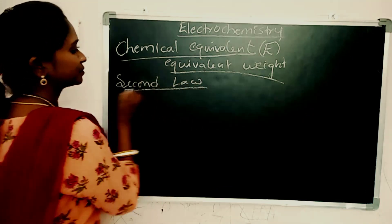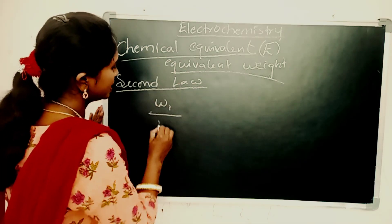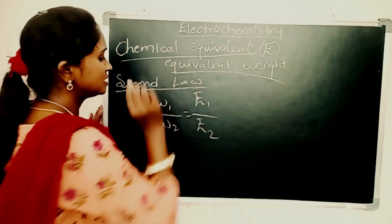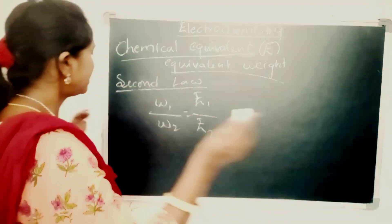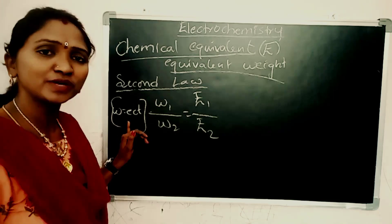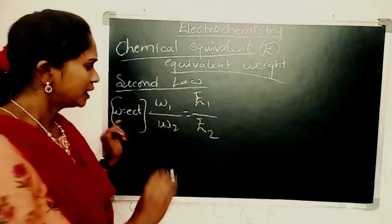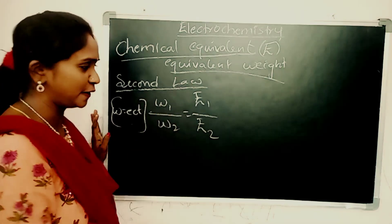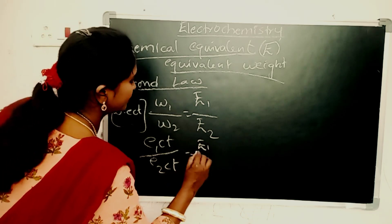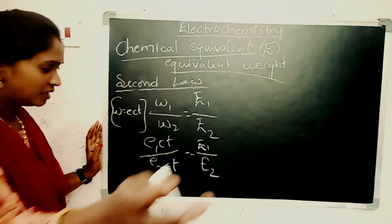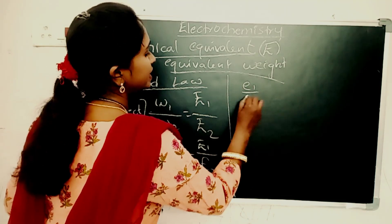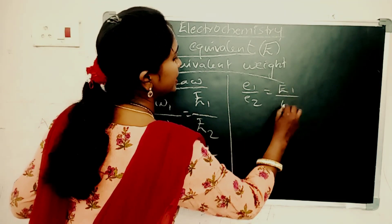According to Faraday's second law, W1 divided by W2 equals capital E1 divided by capital E2. Already we know from the first law that W equals eCt. We can replace W with eCt in the second law: e1·Ct divided by e2·Ct equals capital E1 divided by capital E2. The Ct terms cancel, giving small e1 divided by e2 equals capital E1 divided by E2.